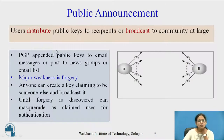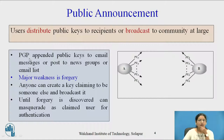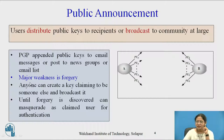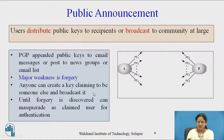With public announcement, a user distributes their public key to recipients or broadcasts it to the community at large. PGP — Pretty Good Privacy — is one of the better known techniques, appending public keys to email messages or posting to newsgroups or email lists. The major weakness is forgery: anyone can create a key claiming to be someone else and broadcast it. Until the forgery is discovered, they can masquerade as the claimed user. In summary, A and B broadcast their keys and anyone who wants to communicate with them can use them.